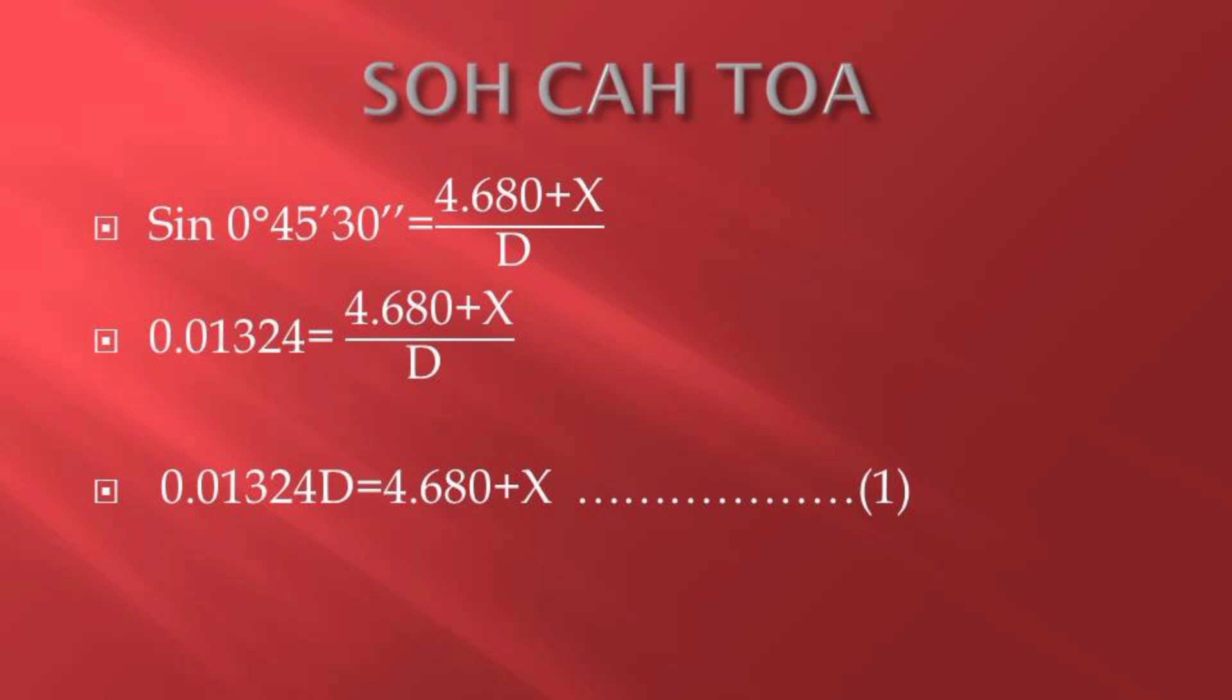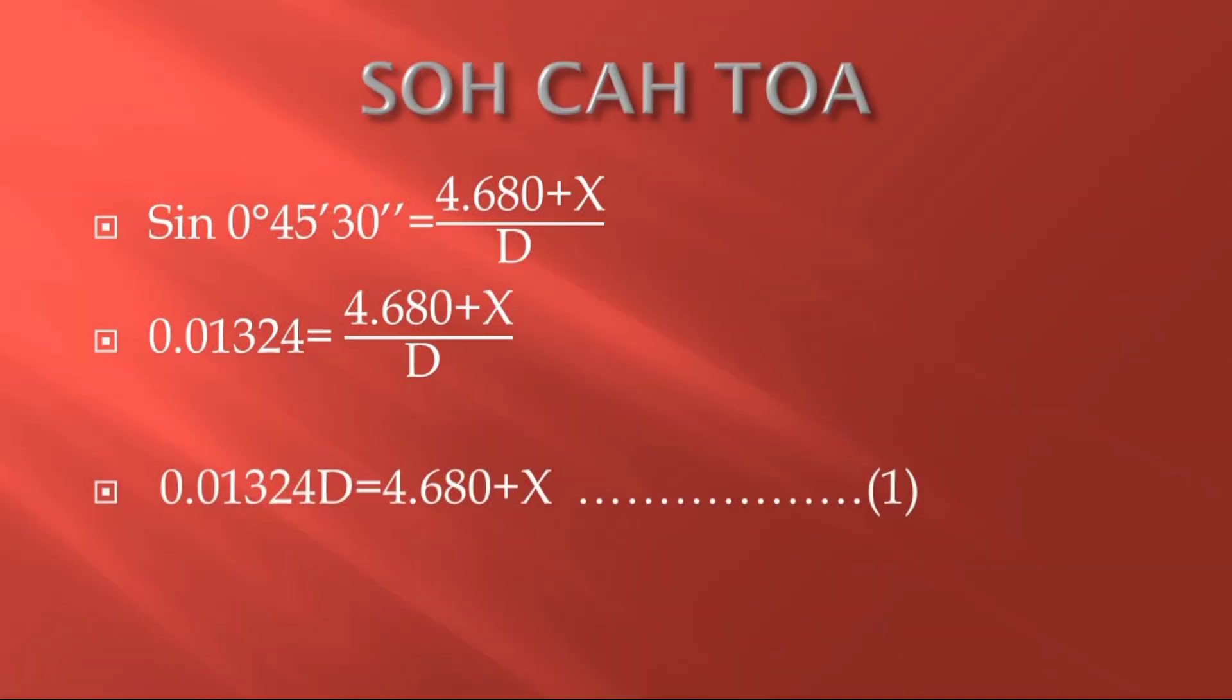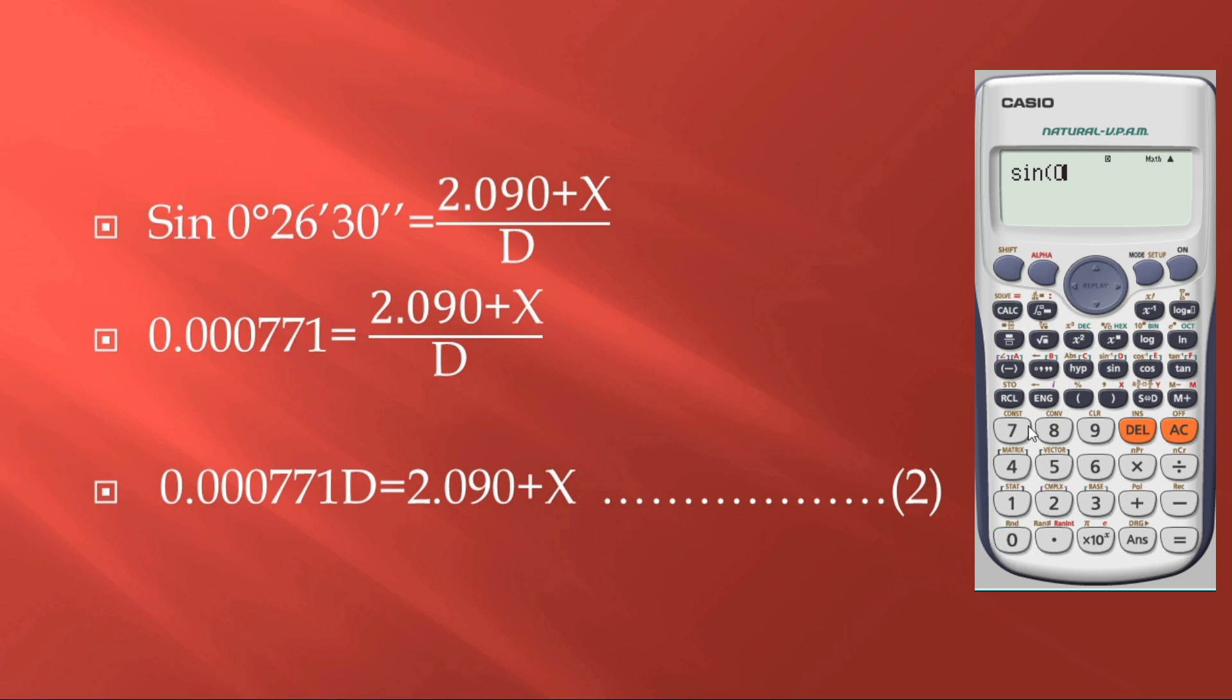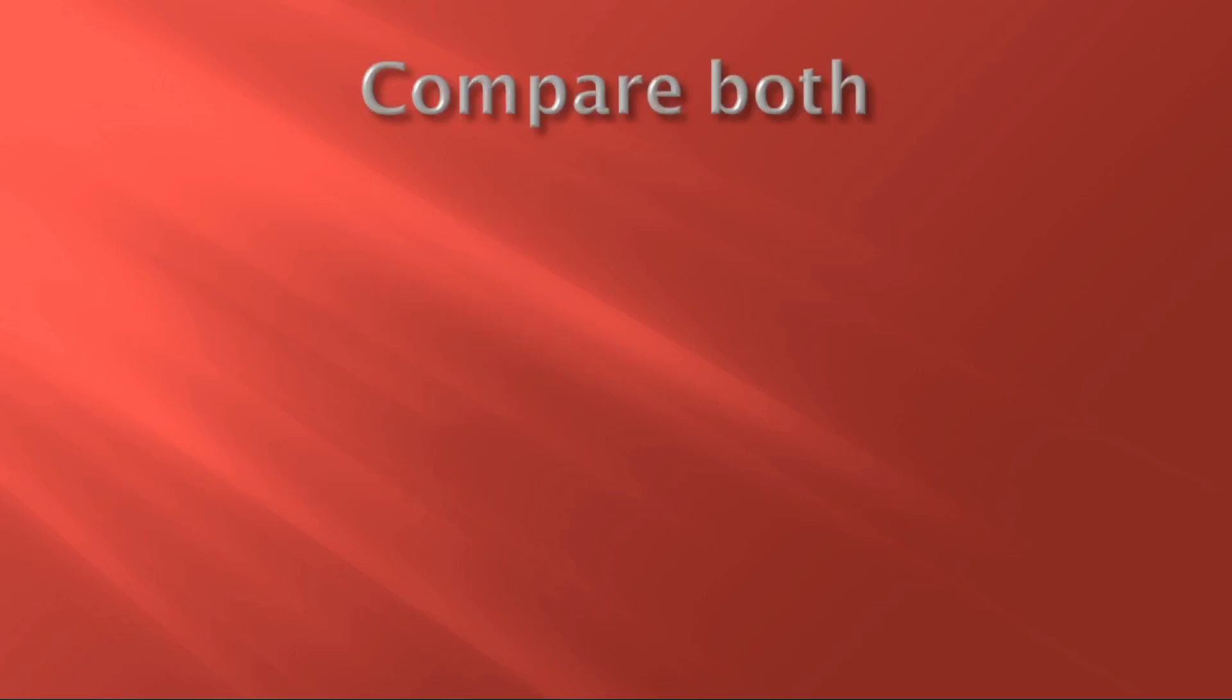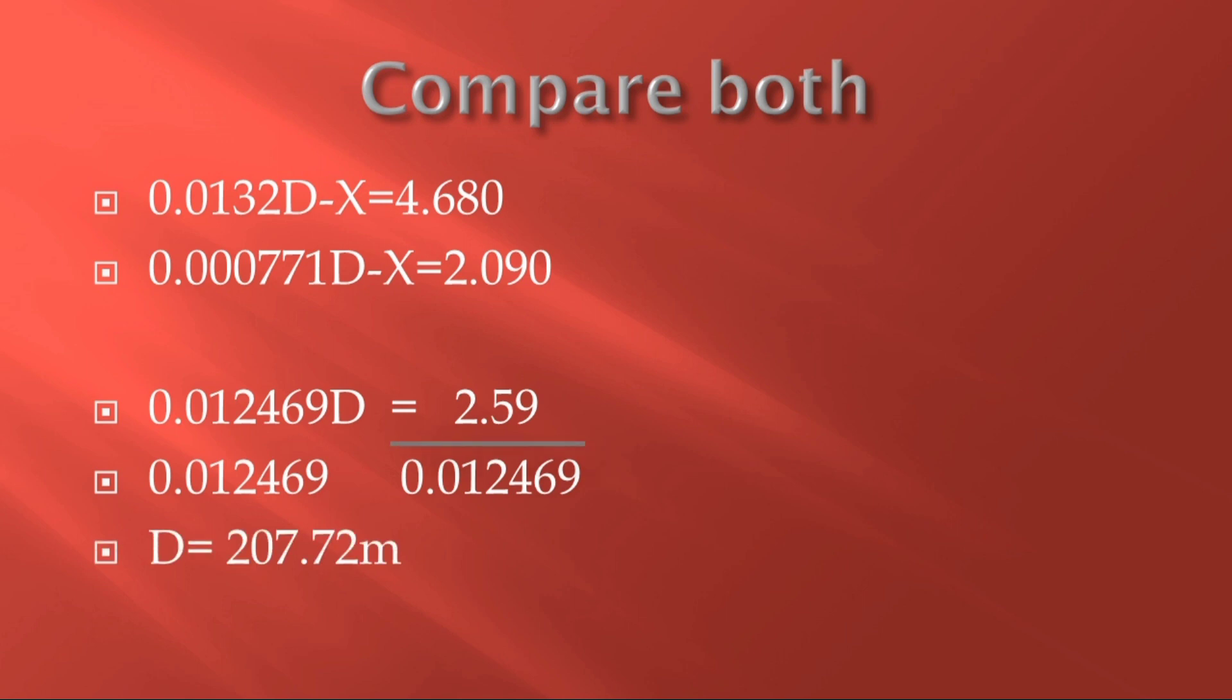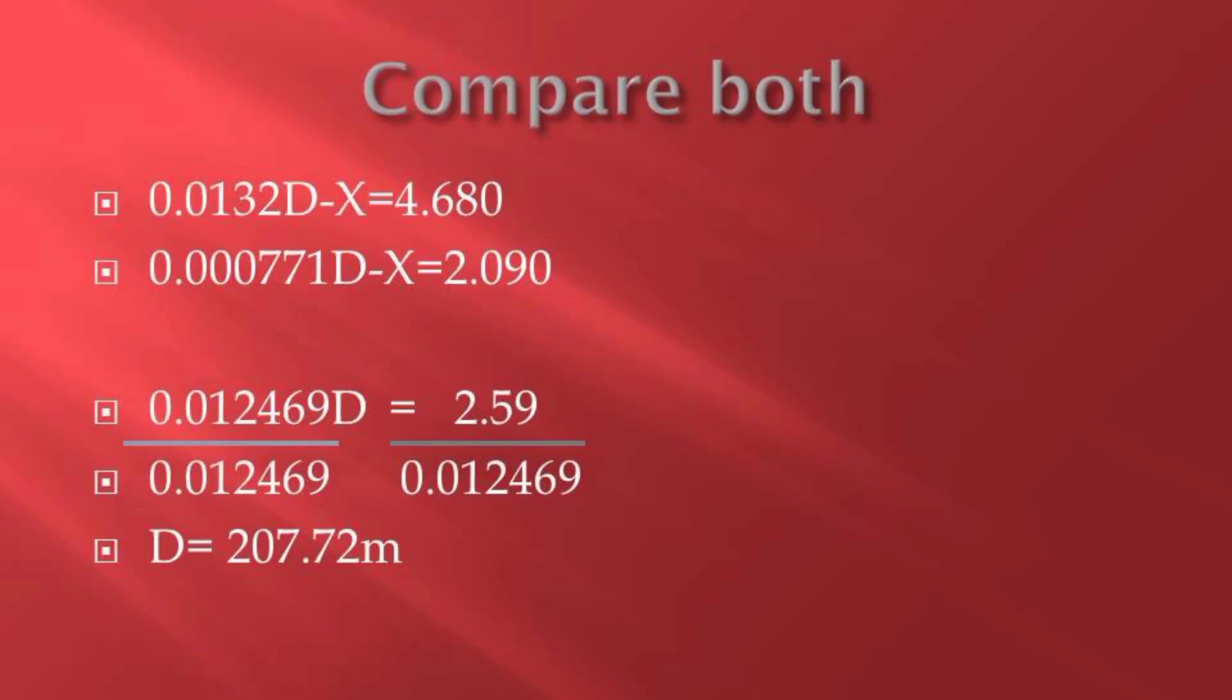Then we'll do the same to our second part where sin 0°26'30" will be equal to V, will be equal to 2.09 plus X, that is our V the opposite side, over D that is the hypotenuse. Using cross multiplication we have gotten our second equation. Comparison of both two equations by either the simultaneous equation, we can compare those two because our information we have data given to us which has two unknowns.